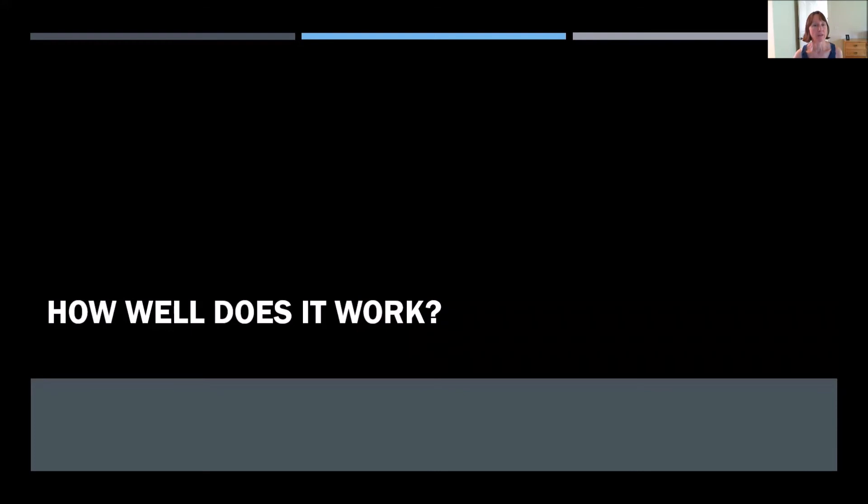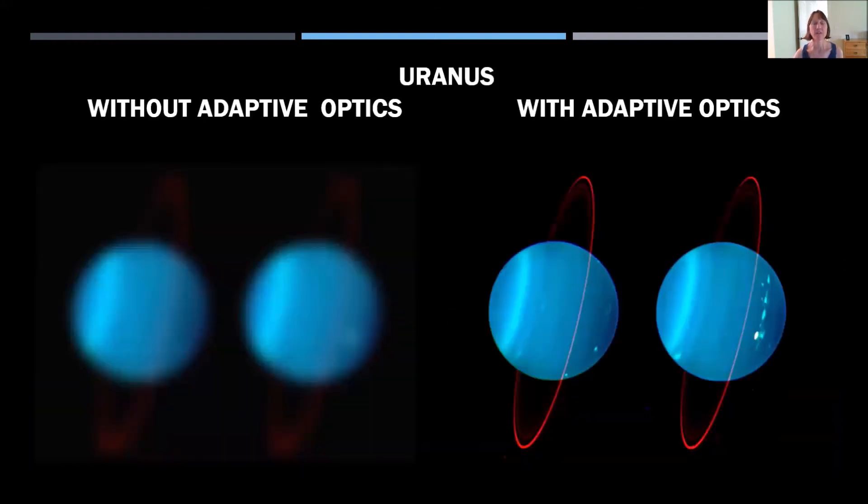So how well does adaptive optics work? On the left is the picture of Uranus without adaptive optics turned on, and on the right are the same images of Uranus with adaptive optics. And you can see that with adaptive optics, you can get much more detail and clarity for the same image.